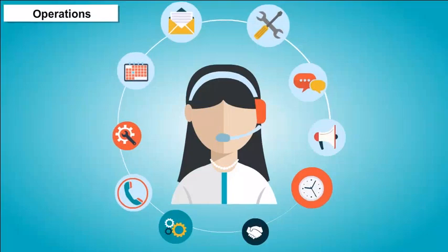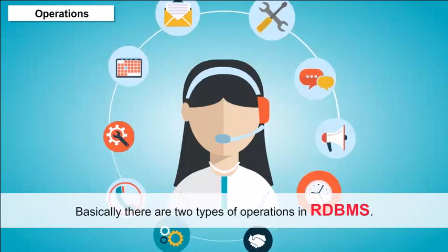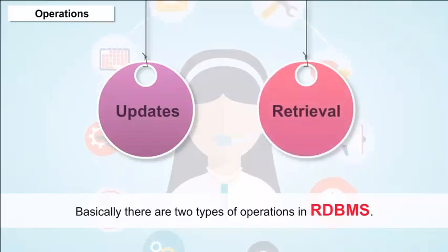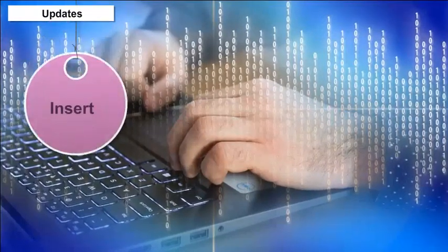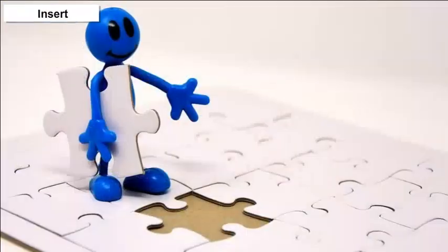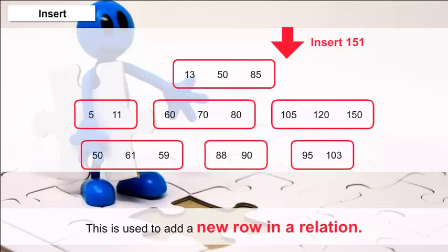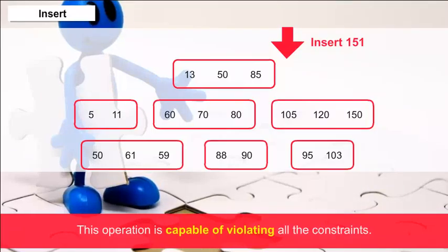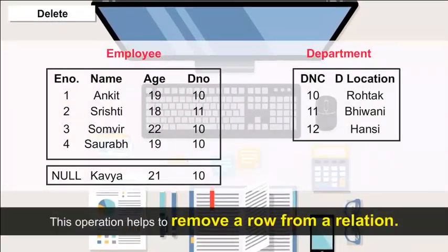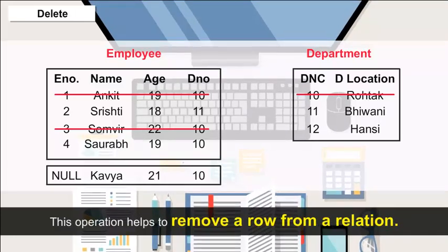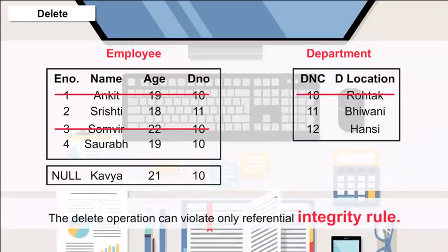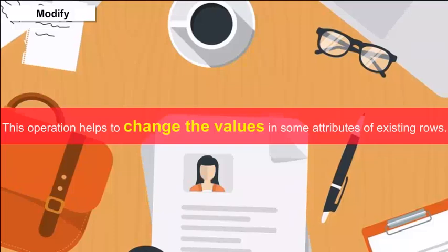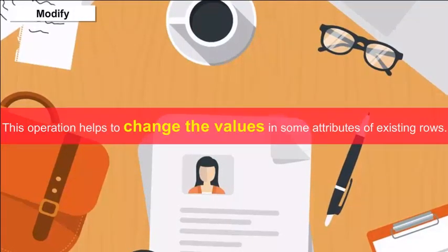Operations in RDBMS — basically there are two types of operations: Updates and Retrieval. There are three types of updates: 1. Insert — used to add a new row in a relation; this operation is capable of violating all constraints. 2. Delete — this operation helps to remove a row from a relation; the delete operation can violate only the referential integrity rule. 3. Modify — this operation helps to change the values in some attributes of existing rows.